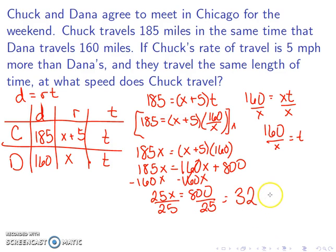So keep in mind, x is equal to 32. The problem actually asks for Chuck's speed, which is x plus 5. So my actual answer would be 32 plus 5, which is 37.